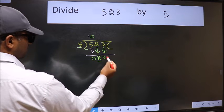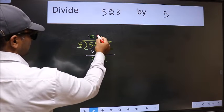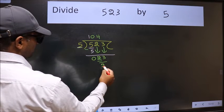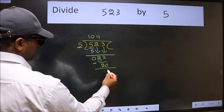Now 23. A number close to 23 in the 5 table is 5 times 4 equals 20. Now we should subtract. We get 3.